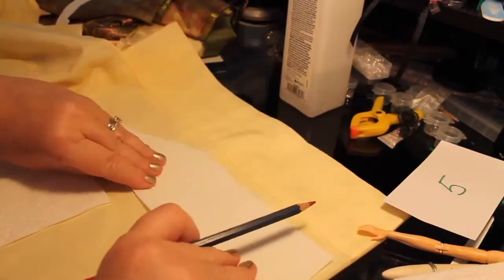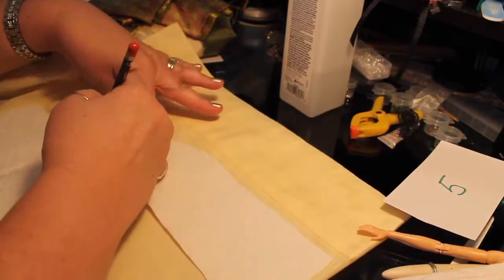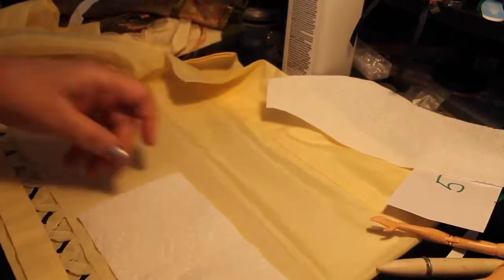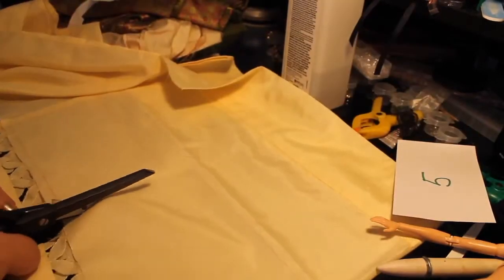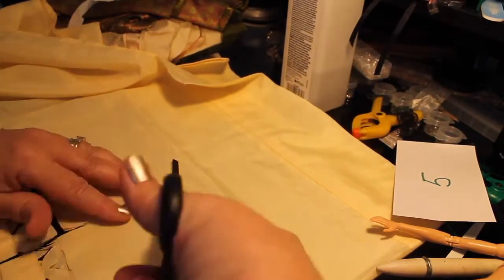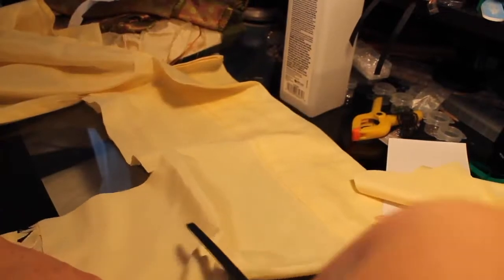Now I'm making the under robe, sort of like a slip. I'm cutting out two fronts and two sleeves. This material is doubled, and then once I get these cut out I can open it up and cut out the back, which is just one single piece.